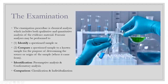The examination procedure involves chemical analysis, which includes both qualitative and quantitative analysis of evidence material. Forensic analysis may be performed to identify and to compare. For example, if we receive an unknown powder — a questioned sample — the forensic laboratory needs to identify it or compare it with a known sample. The identification procedure should include a presumptive test and a confirmatory test.